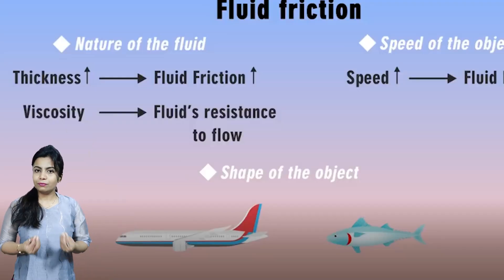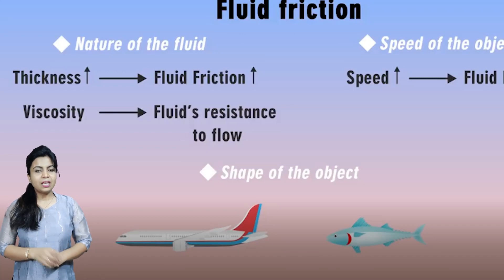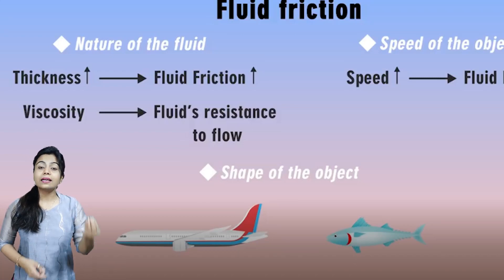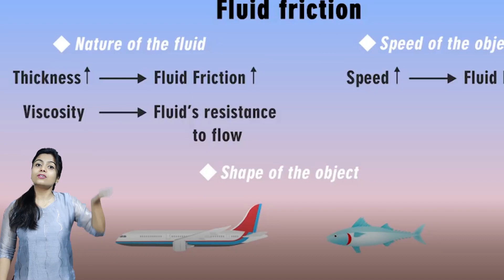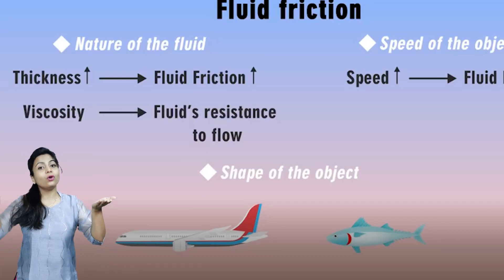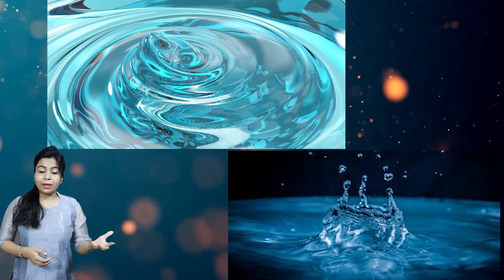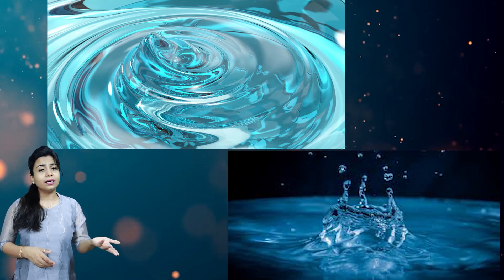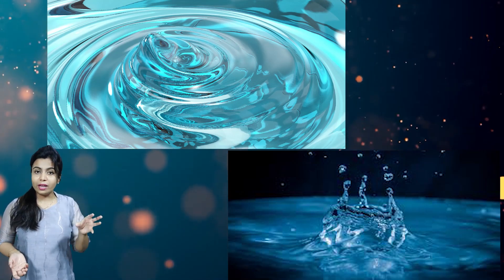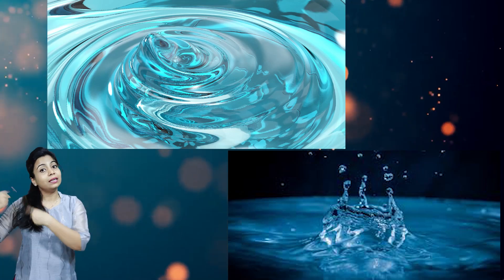The nature of fluid friction depends on three things. The first is the thickness of the liquid. When the thickness of the liquid increases, friction also increases. For example, comparing gel and water — gel is thicker than water, so gel will apply more friction than water.